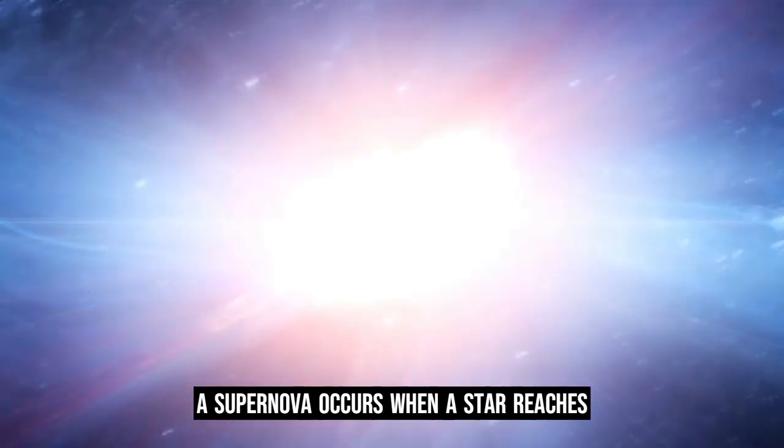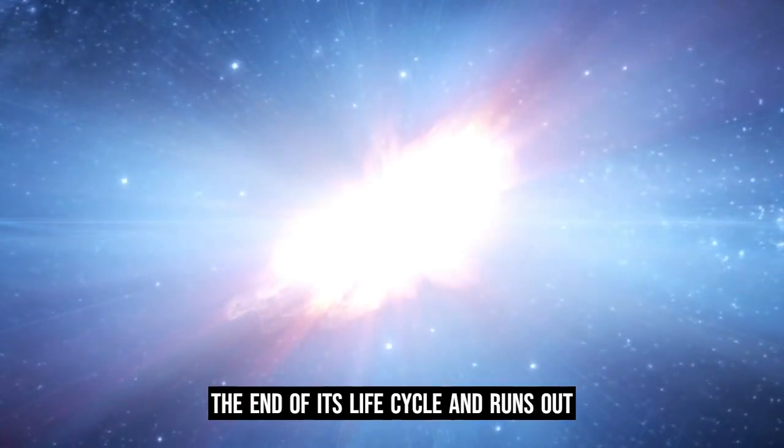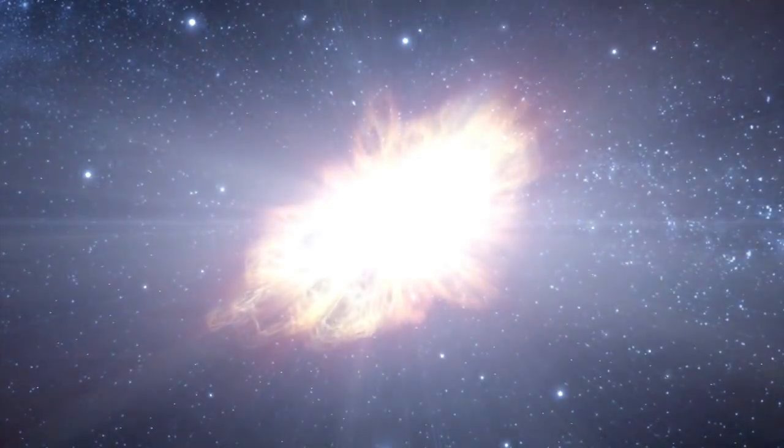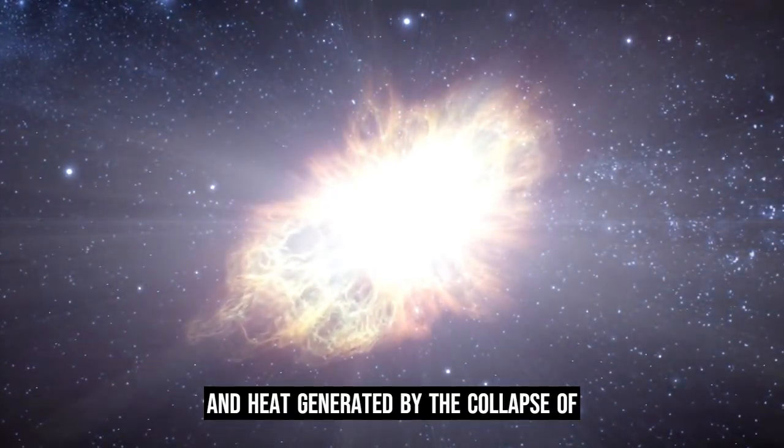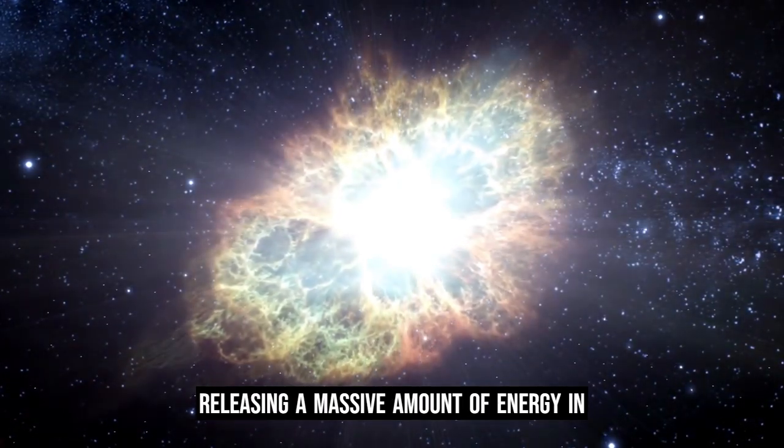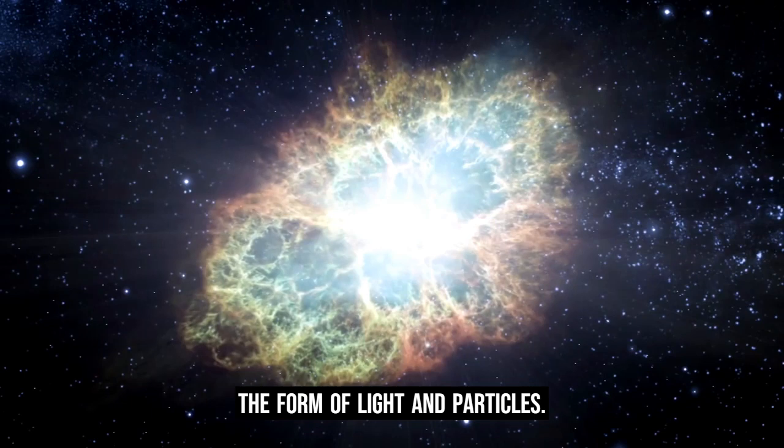A supernova occurs when a star reaches the end of its life cycle and runs out of fuel. The intense pressure and heat generated by the collapse of the star can cause it to explode, releasing a massive amount of energy in the form of light and particles.